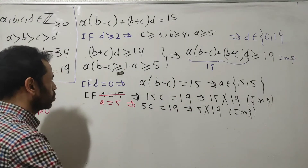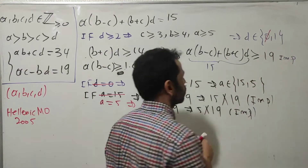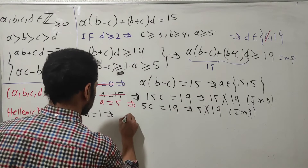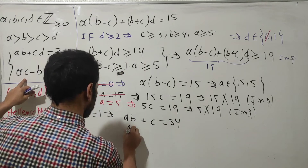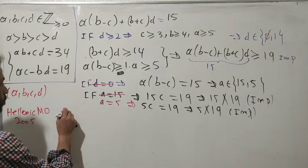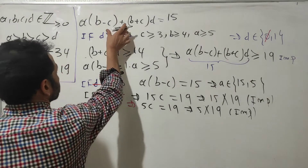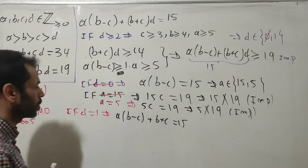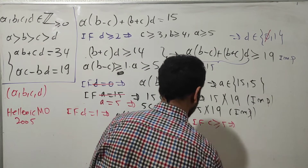Now let's try d = 1. Replacing d with 1 in the original equations gives ab + c = 34 and ac − b = 19. The linear form equation becomes a(b − c) + (b + c) = 15.